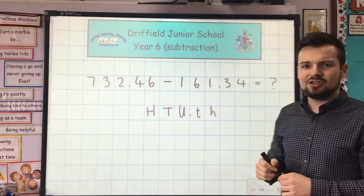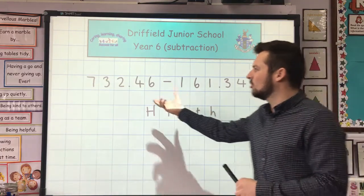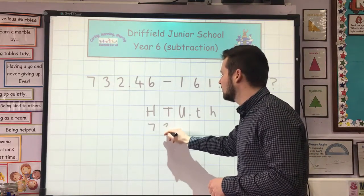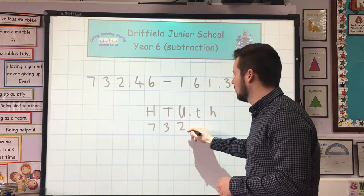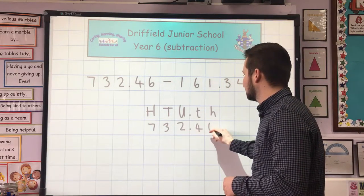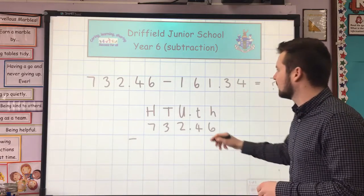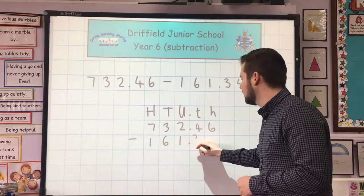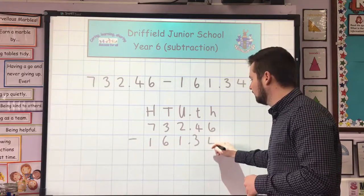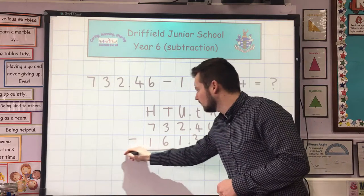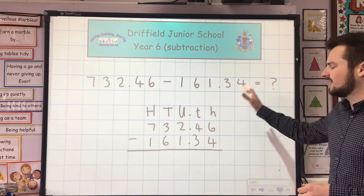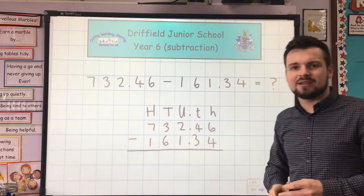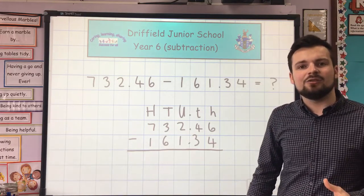I'm going to put the largest number at the top, or the number that's at the start of the calculation here, which is 732.46, subtract 161.34. I'm going to start at the right-hand side and work my way across to the left-hand side, carrying if I need to.